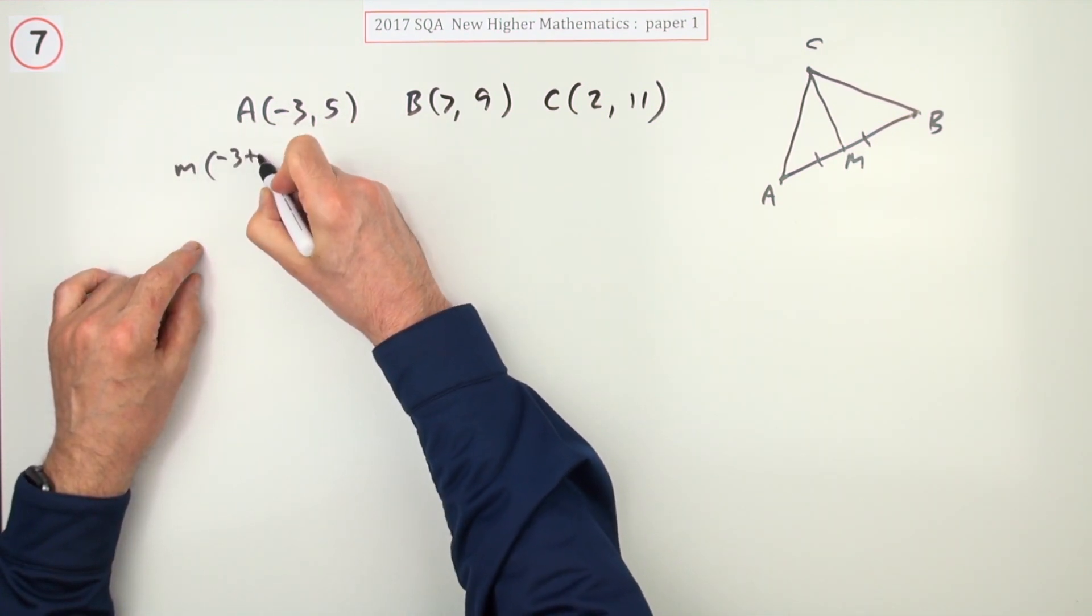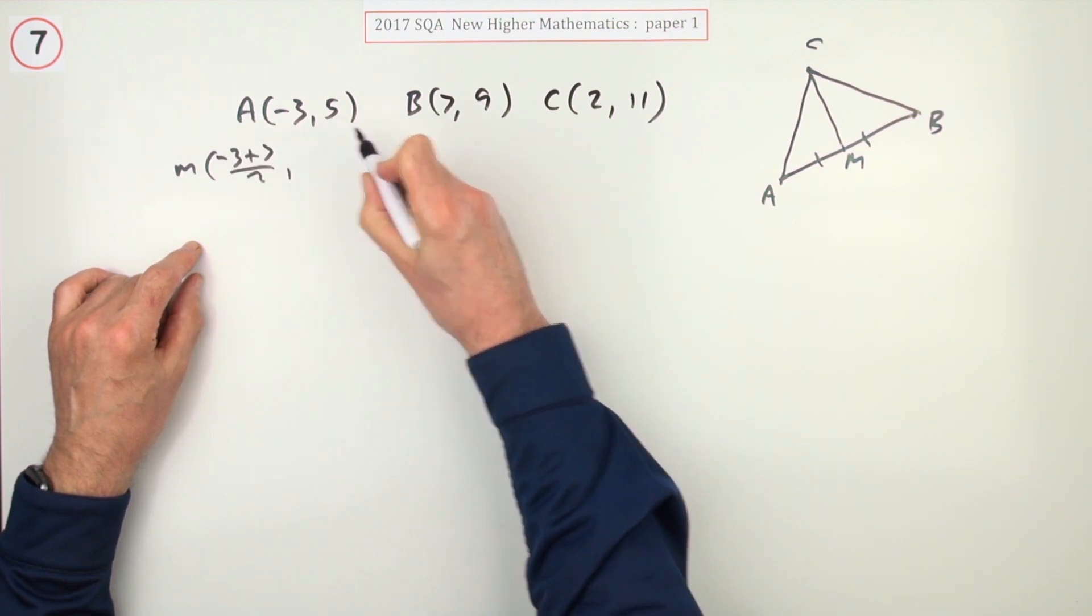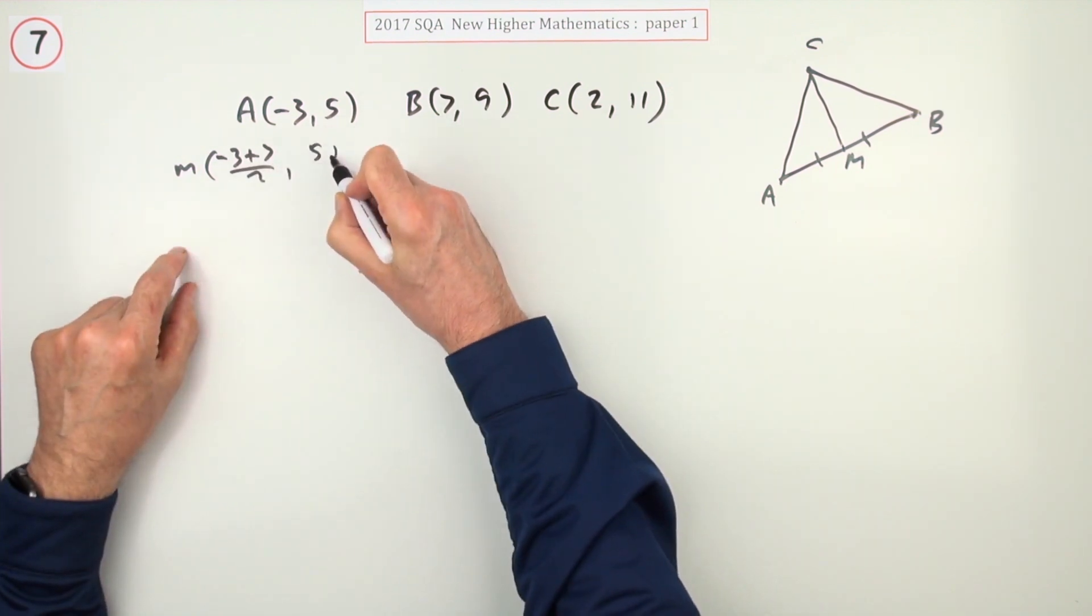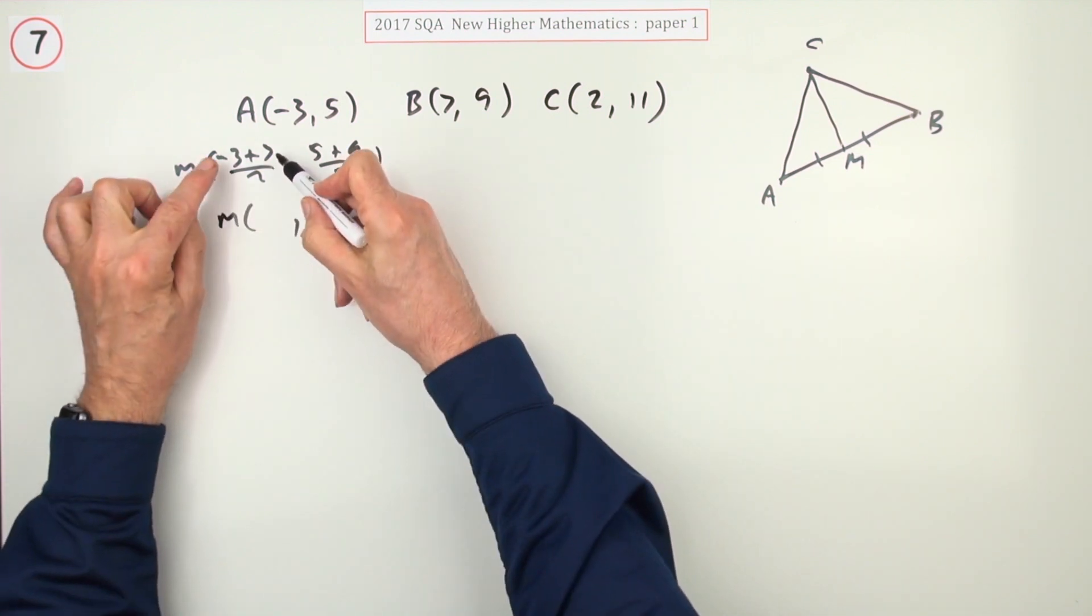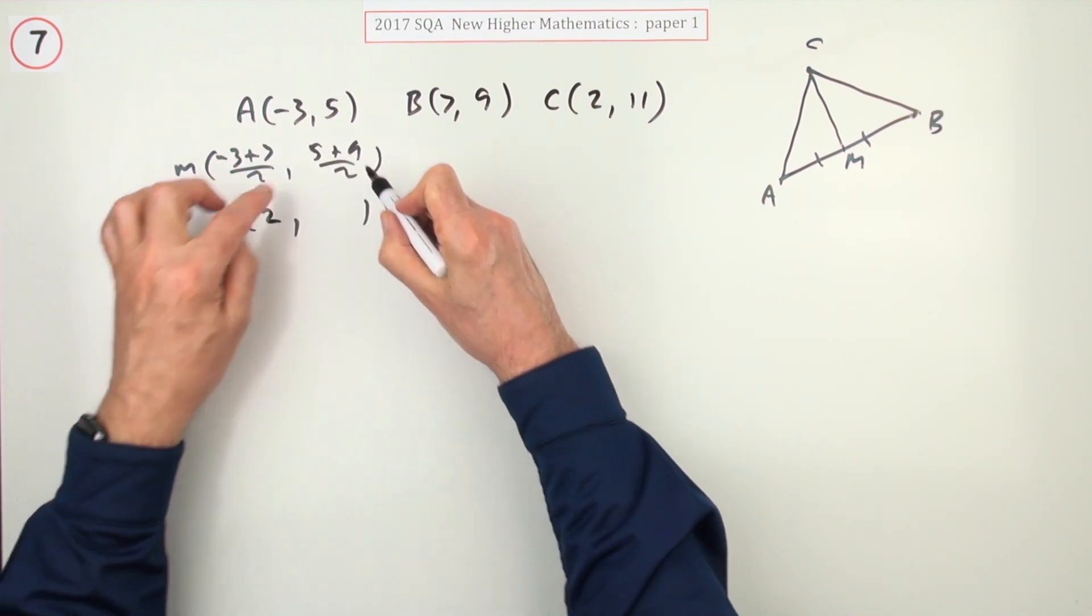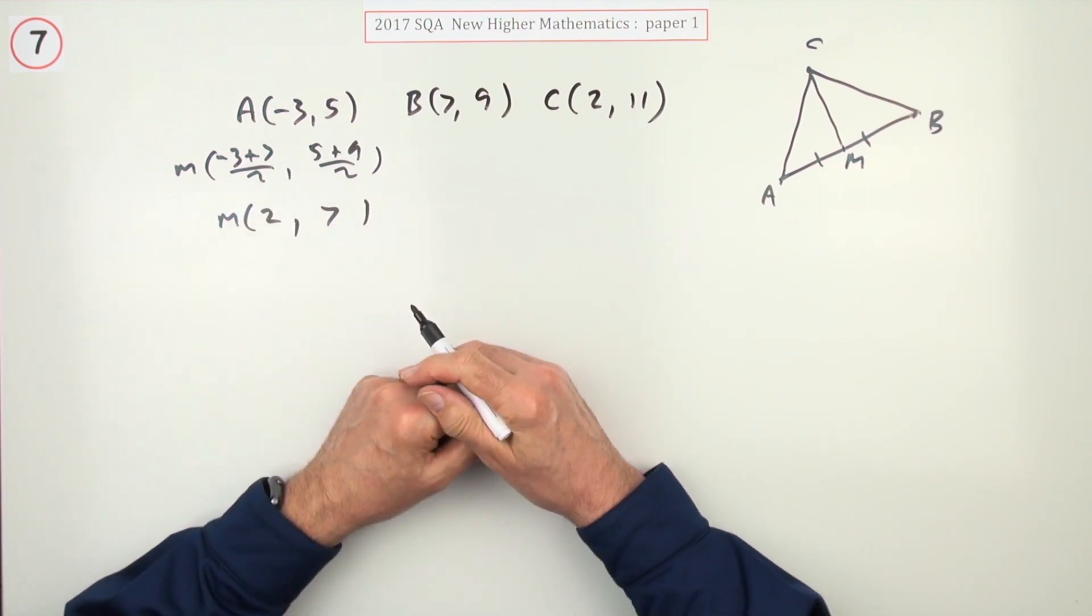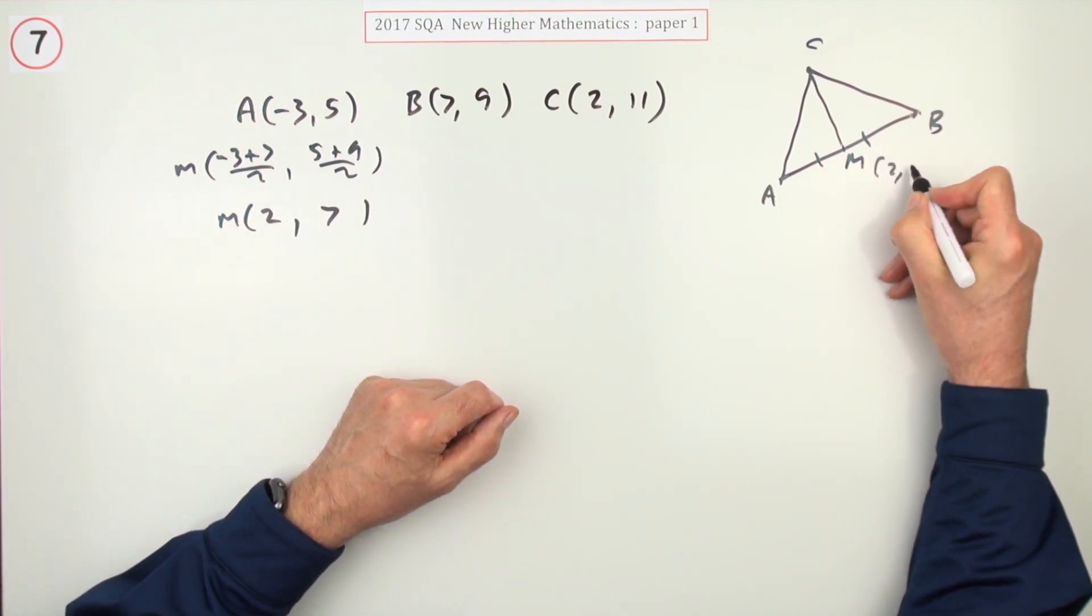Well, what's halfway between negative 3 and 7? And what's halfway between 5 and 9? So the midpoint is going to be, well, that's 4 over 2 is 2, and that's 14 over 2 is 7. So that's the point 2, 7.